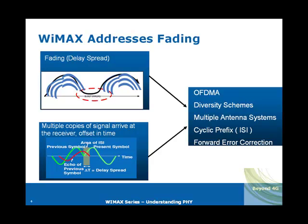There are also forward error correction methods in Mobile WiMAX which help counteract fading. The higher the frequency for wireless communication, the higher the amount of fading. Mobile WiMAX addresses fading through a new access mechanism called OFDMA, diversity schemes, multi-antenna MIMO systems, cyclic prefix, and forward error correction methods — all combined to counteract fading channels.